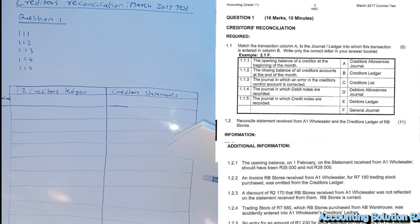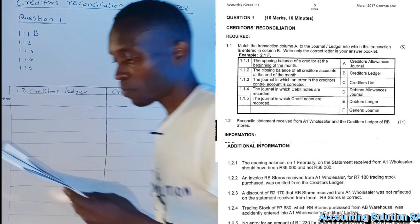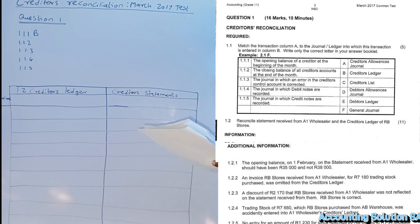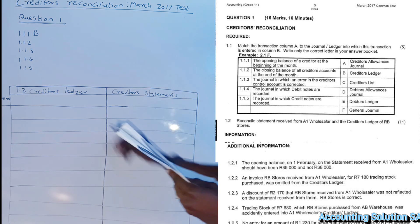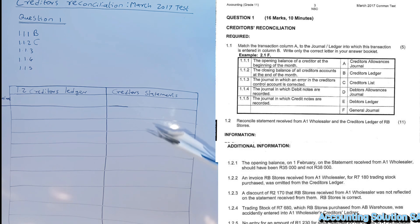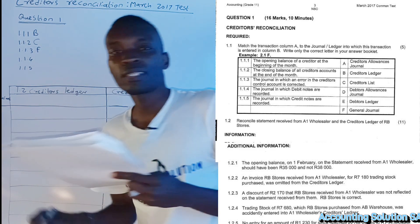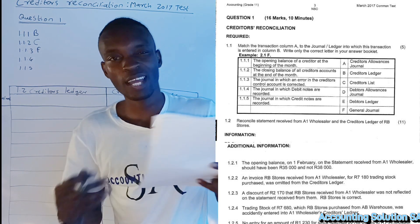For 1.1.1, the opening balance of creditors at the beginning of the month — we record this in the creditors ledger, so the answer is B. For 1.1.2, the closing balance of all creditors accounts at the end of the month — we have to list them all, so the answer is C, the creditors list. For 1.1.3, the journal in which an error in the creditors control account is corrected — the answer is F, the general journal, because we record all mistakes and non-cash items in the general journal.